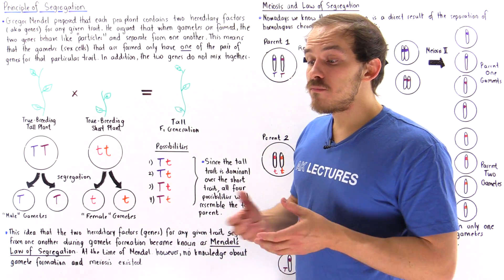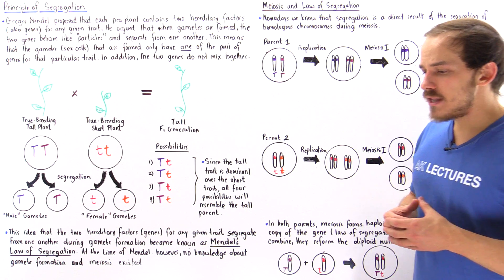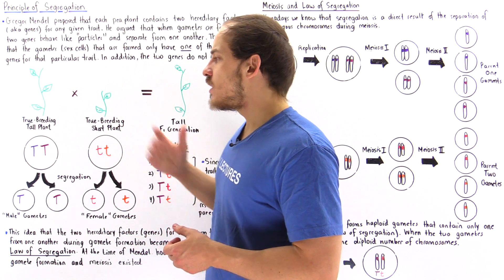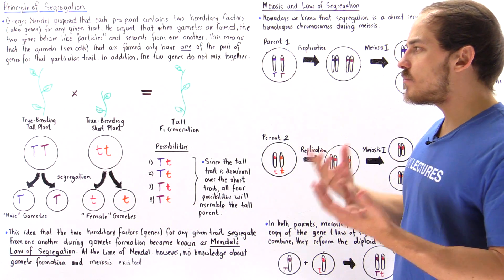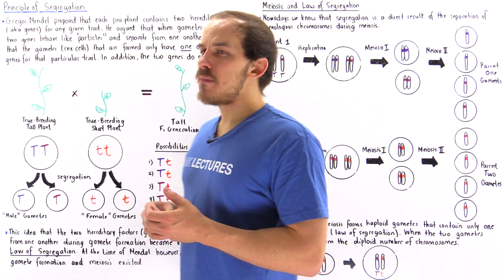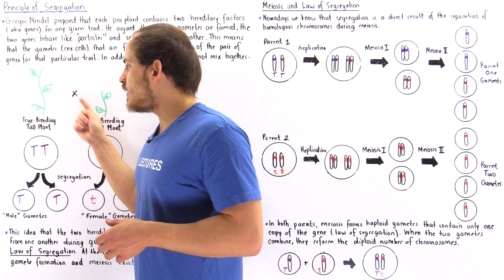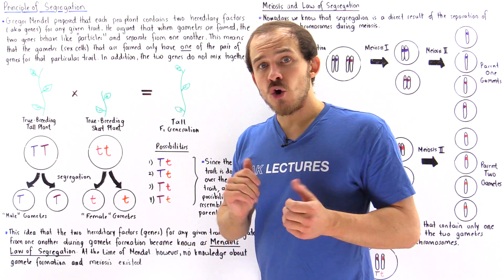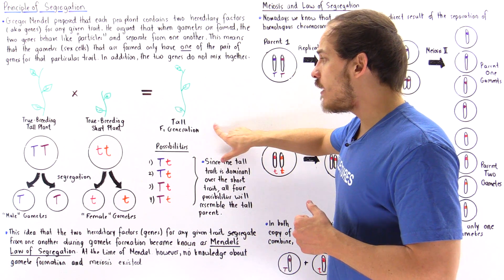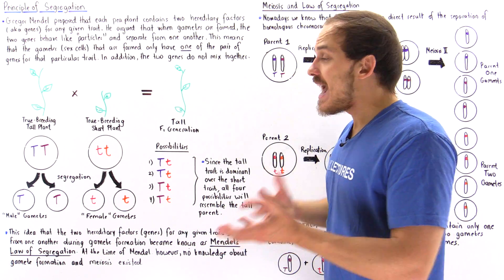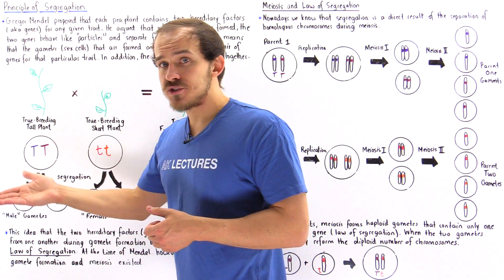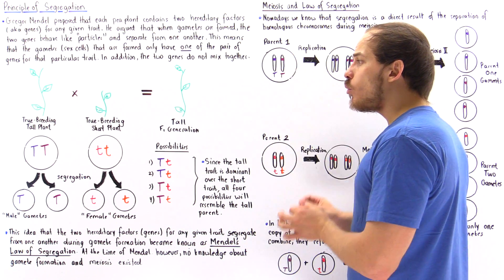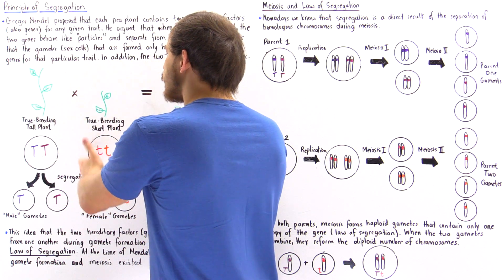Previously we discussed a very important experiment conducted by Gregor Mendel which gave rise to the law of dominance. To briefly summarize: Mendel crossed a true breeding tall plant with a true breeding short plant, and every time he tried this experiment the F1 generation offspring was always tall. When he tried the experiment with other traits, the F1 generation offspring always resembled one parent and never the other.